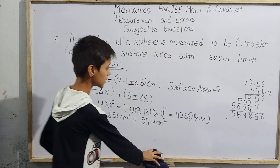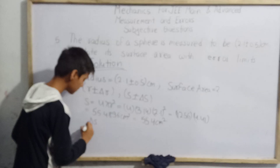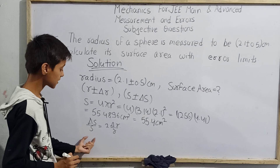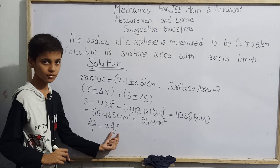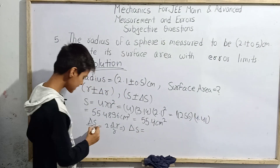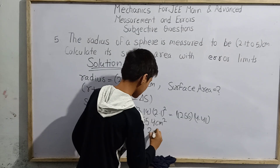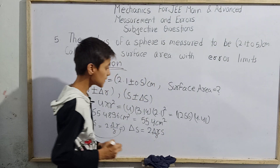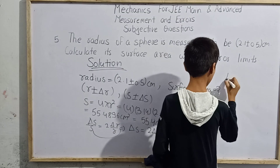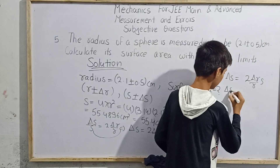Now we calculate delta S. We use the property that delta S by S equals 2 times delta r by r. Rearranging, delta S equals 2 times delta r divided by r, times S.